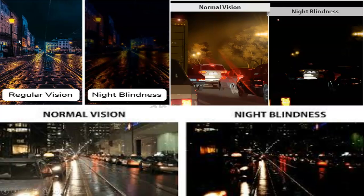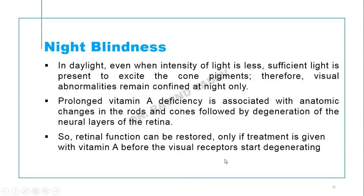Images here differentiate between regular night vision and vision seen by a person with night blindness. In normal night vision you can see cars and red colors, but in night blindness only very bright things, like excessive red light from a car, may be visible. People with night blindness have no problem during daylight, even when light intensity is reduced, because sufficient light is present to excite their cones. Prolonged Vitamin A deficiency is associated with anatomical changes in the rods and cones, which can later lead to degeneration of the neural layers of the retina.